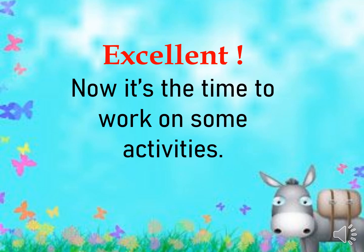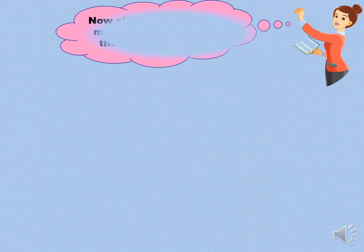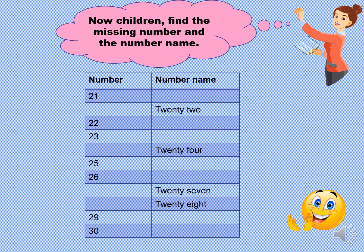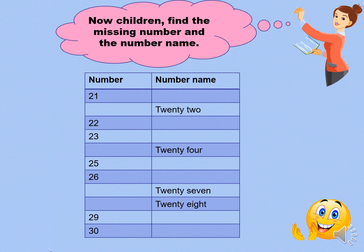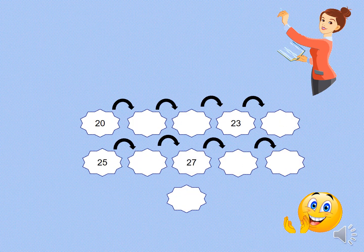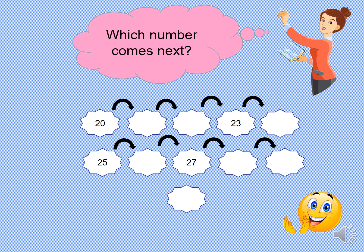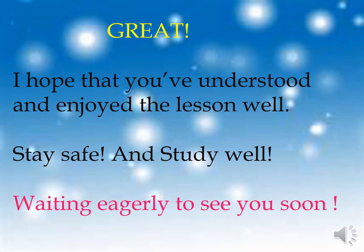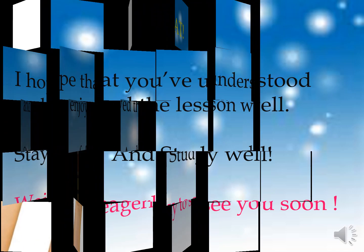Now it's time to work on some activities. Activity 1: find the missing number and the number name, and complete the table. Activity 2: which number comes next? Great. I hope that you have understood and enjoyed the lesson well. Stay safe and study well. Waiting eagerly to see you soon. Goodbye.